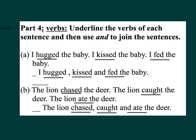Part four — Verbs: Underline the verbs of each sentence and then use AND to join the sentences. A: 'I held, kissed, and fed the baby.' B: 'The lion chased, caught, and ate the deer.'